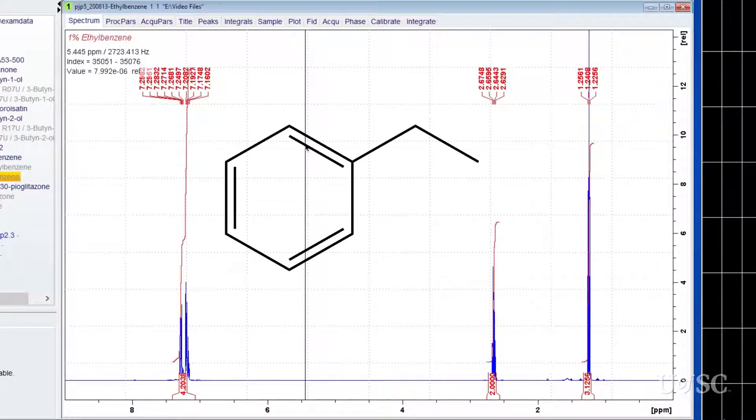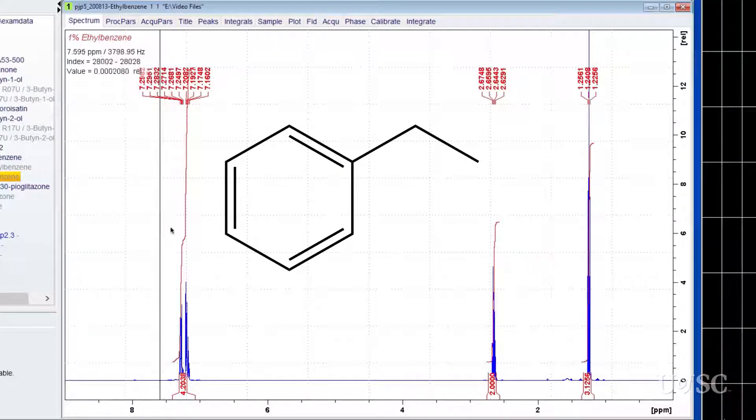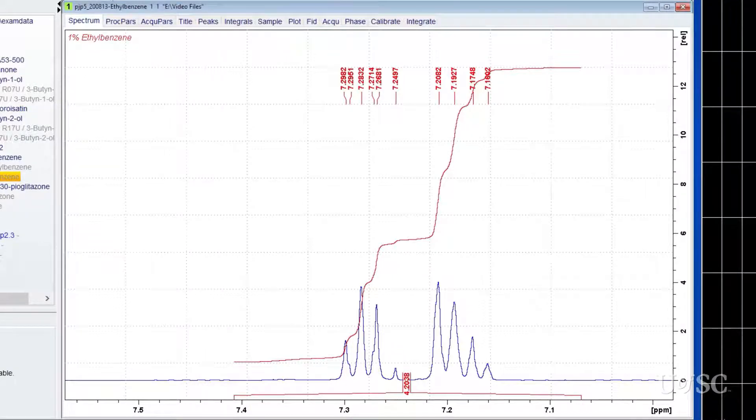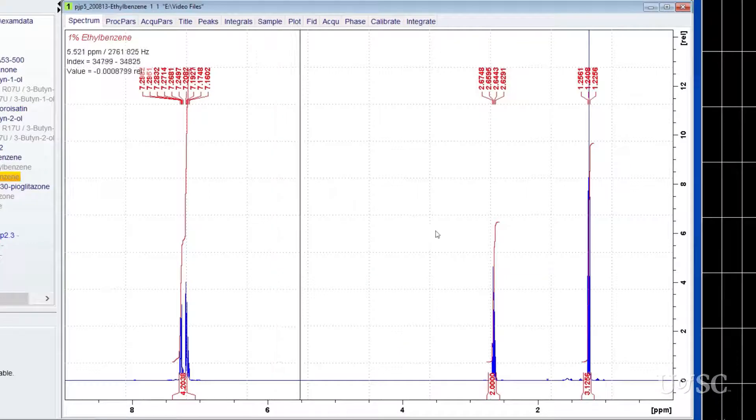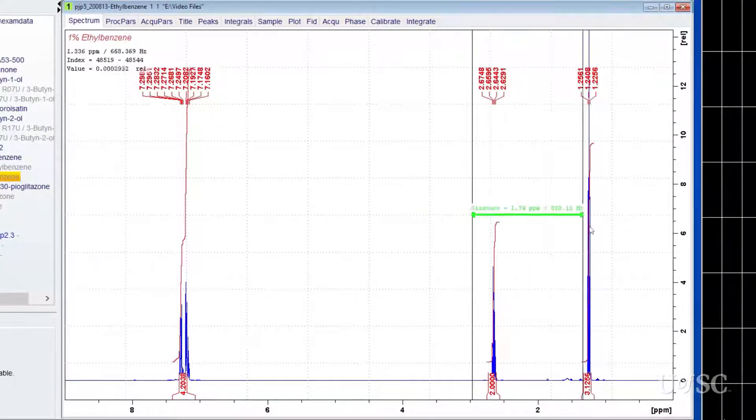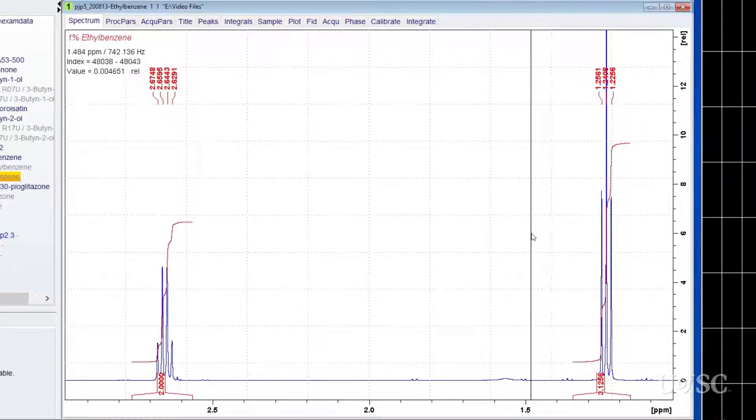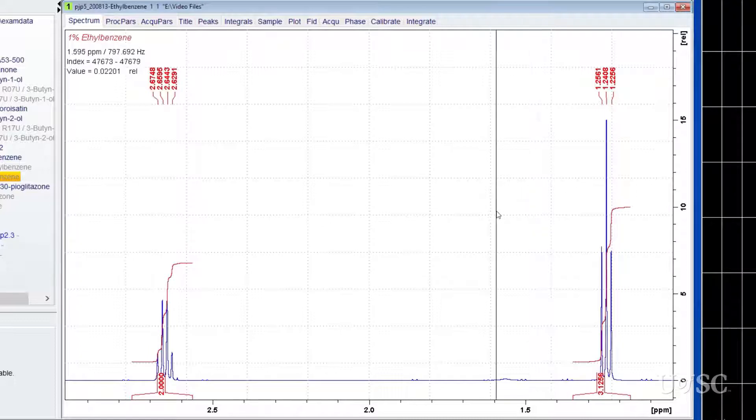We are going to start with a spectrum of ethyl benzene. Even at 500 MHz, the aromatic region is a little too congested for multiplet analysis, so we will just focus on the alkyl region. There are two chemical shifts for the ethyl group. The quartet near 2.65 parts per million is from the methylene protons. The splitting is due to the three protons on the neighboring methyl carbon.